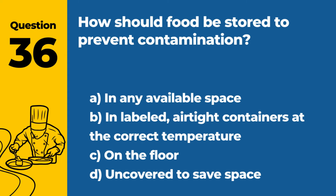Question 36. How should food be stored to prevent contamination? a. In any available space. b. In labeled airtight containers at the correct temperature. c. On the floor. d. Uncovered to save space. Answer b. In labeled airtight containers at the correct temperature. Food should be stored in labeled airtight containers at the correct temperature to prevent contamination and spoilage.